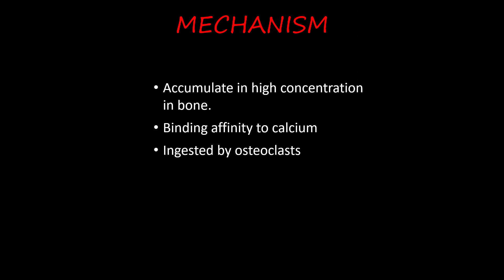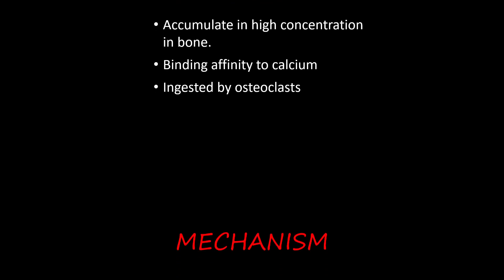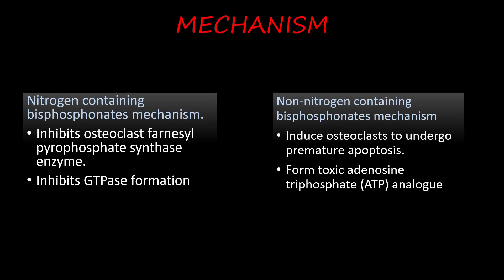Bisphosphonate drugs target bone tissue and accumulate in high concentrations in the bone because they have a high binding capacity to calcium. Bisphosphonates are ingested by osteoclasts. The mechanism of the two types of bisphosphonates is different. In nitrogen-containing bisphosphonates, they inhibit the osteoclast enzyme farnesyl pyrophosphate synthase.